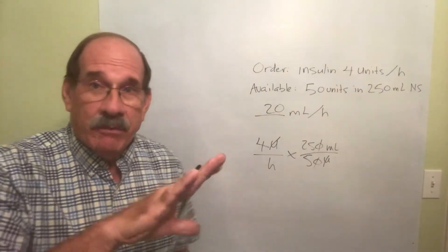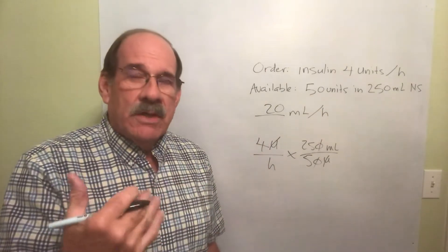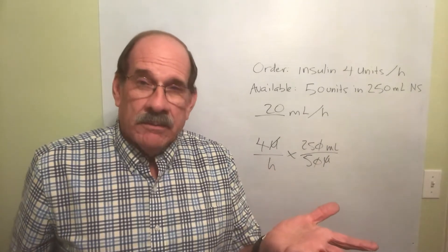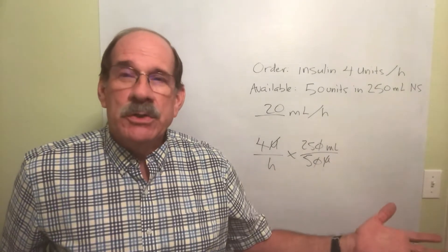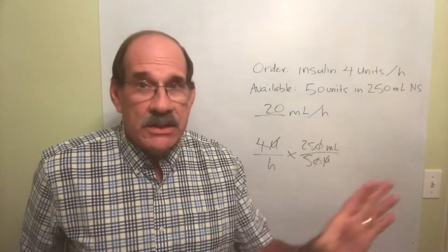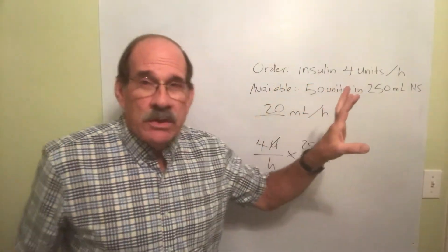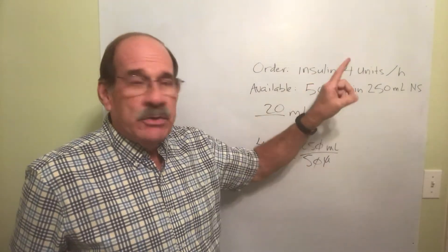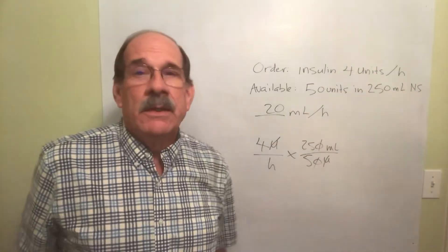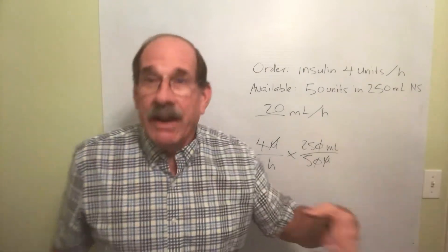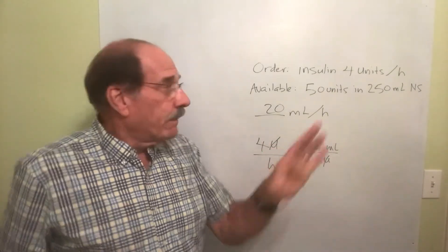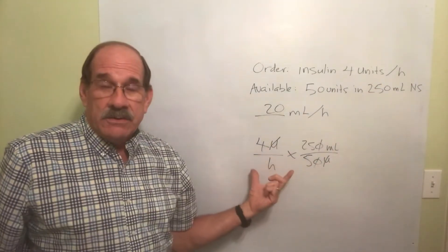Now, before we go to the next thing, let's review. If you're just told the amount of IV liquid and the length of time in which you're to give it — whether or not there's medicine dissolved in it — you just take the milliliters divided by the hours. But this case is different: you've got medicine dissolved in your IV fluid and you're told how many of something to give per hour — units per hour, milli-osmoles per hour, milligrams per hour, micrograms per hour, grams per hour — whatever it is, you work it out like this every time.